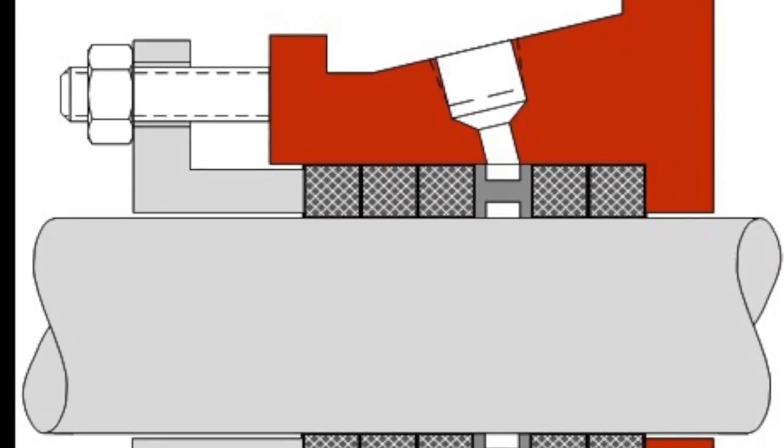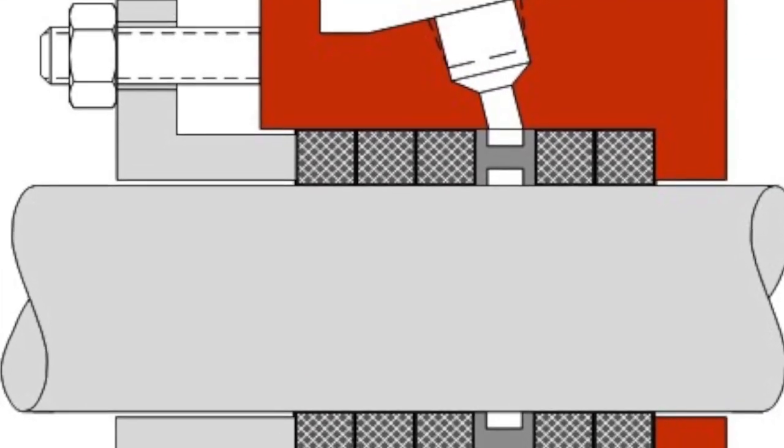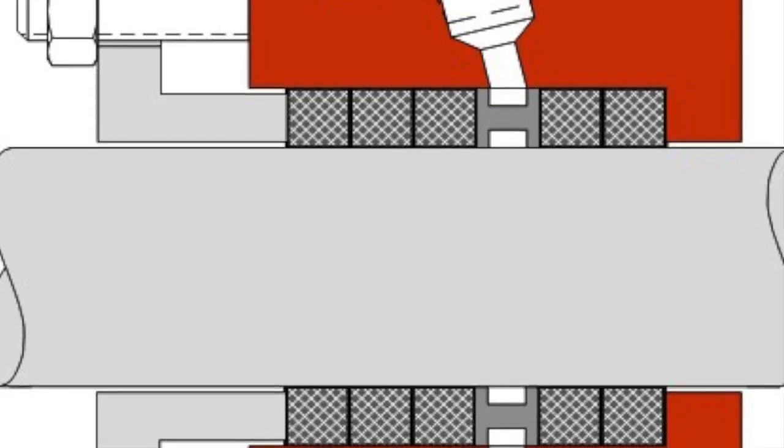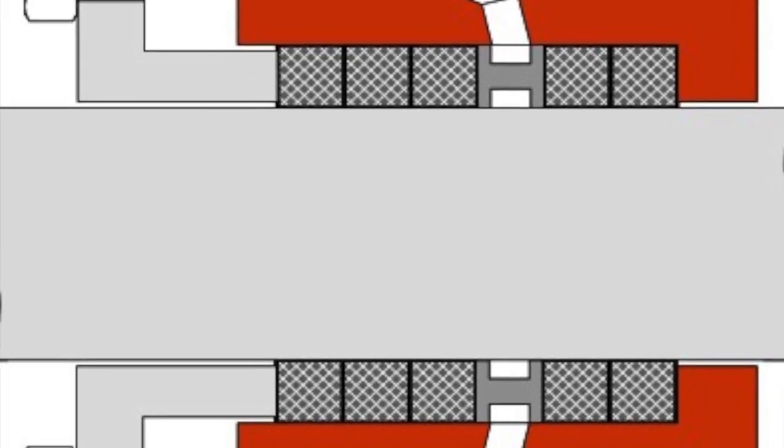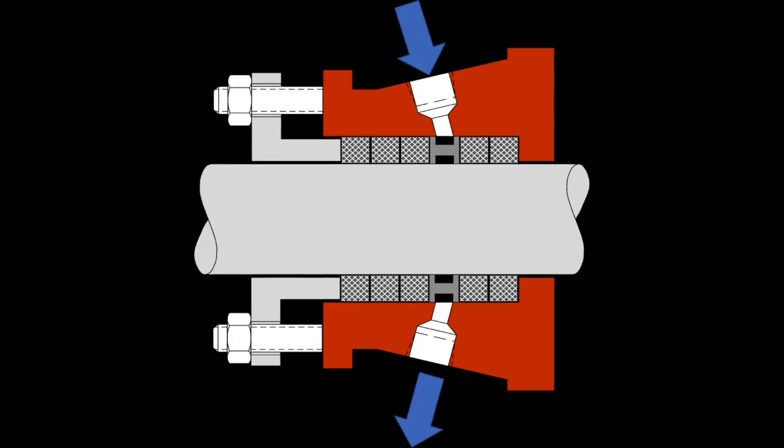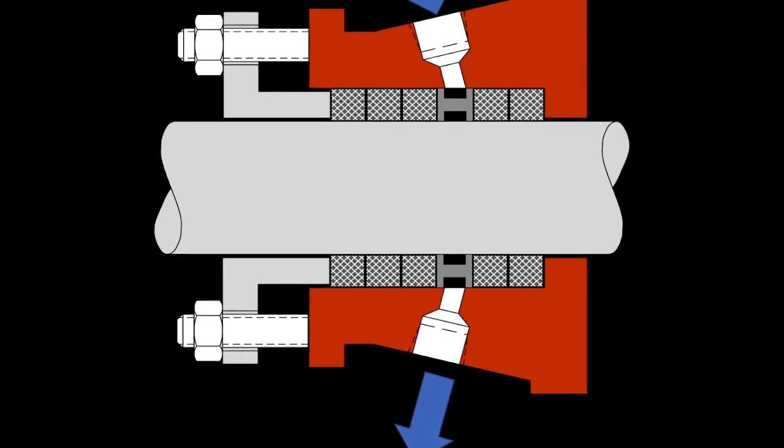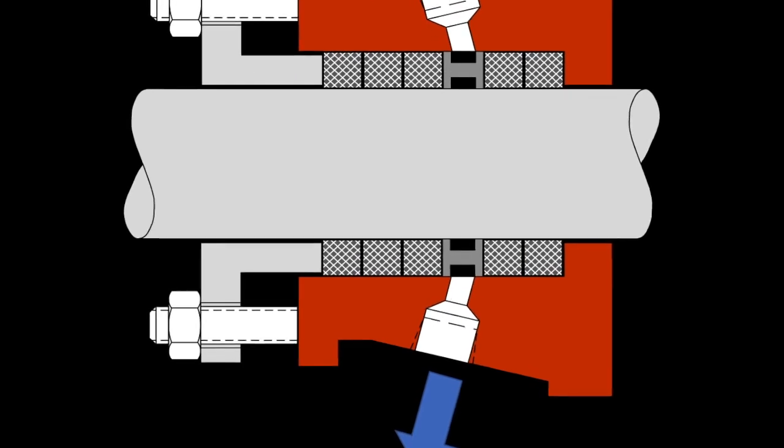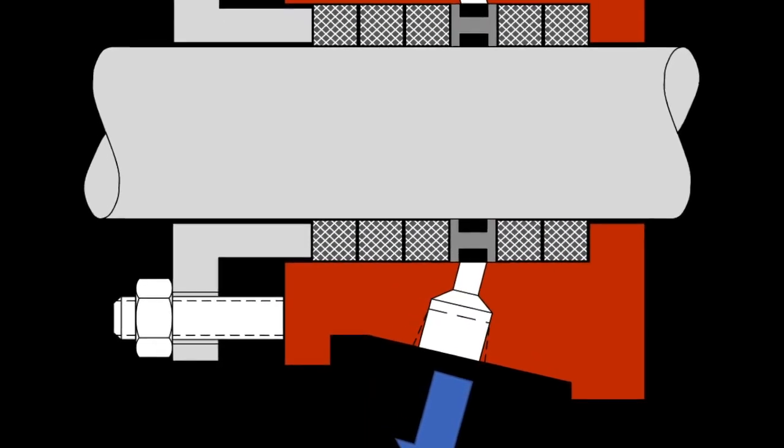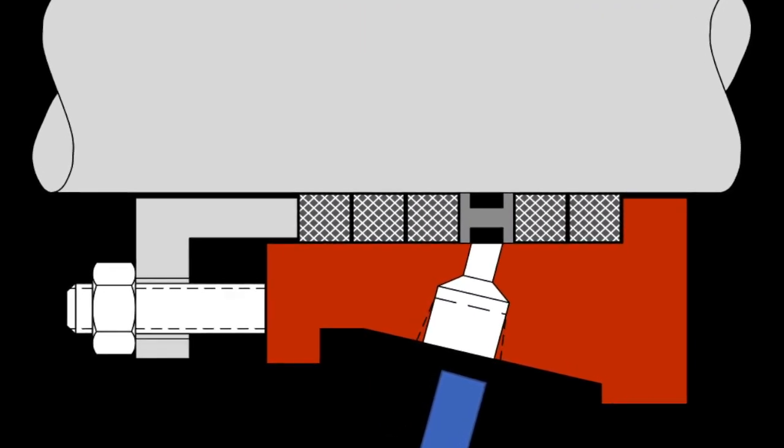One issue that's still seen in the field has to do with misunderstanding lantern ring ports. Sometimes a pump will have two or more lantern ring ports. They were designed to get more flow to fill a larger cavity. Many times people are confused and assume this is a flow in, flow out pattern that's sometimes seen in a mechanical seal.